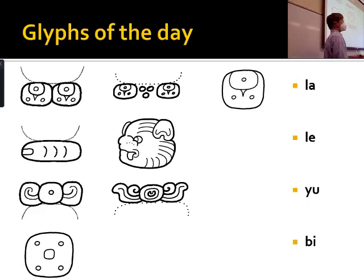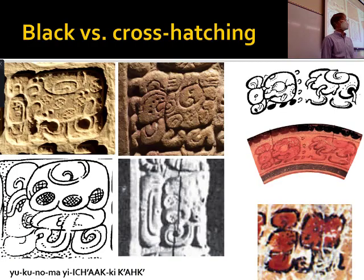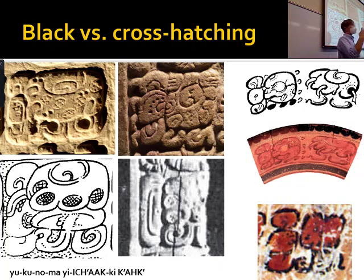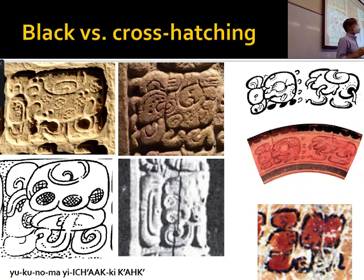These are important signs you'll see quite a bit. You don't have to learn them but it helps to build a vocabulary gradually. There was a question about cross-hatching and blackness. These are some examples — the main logogram is 'itchak,' which you can translate as claw or fingernail.